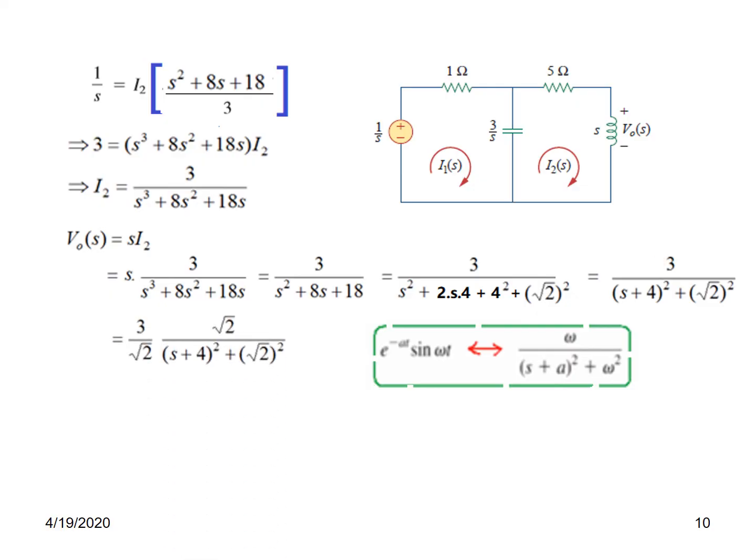The only thing we need is omega at the top instead of 3. So we can manipulate this. We can bring 3 out and divide by square root 2 and multiply by square root 2. So now this perfectly matches with this and now we are ready to go into the time domain by taking inverse Laplace.